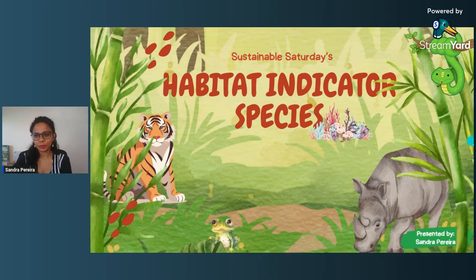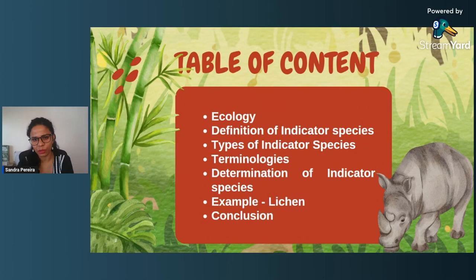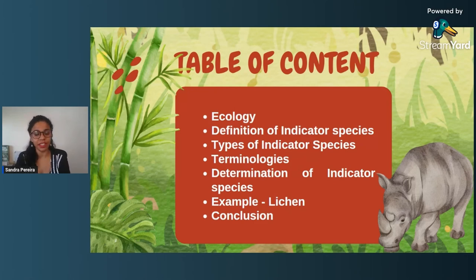So let's look at what is going to be covered in today's session. First, I will give you a little basics about ecology, the definition of indicator species, the different types or broad categories of indicator species, some terminologies around this concept, the determination of indicator species, a very classic example of the lichen as indicator species, and a conclusion to this topic.